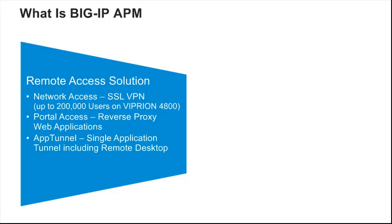BigIP APM is two applications rolled up into a single product. First is a remote access solution that includes an SSL VPN concentrator and a web application reverse proxy engine. There is also an app tunnel method that can be used for single application remote access such as SSH and Remote Desktop.